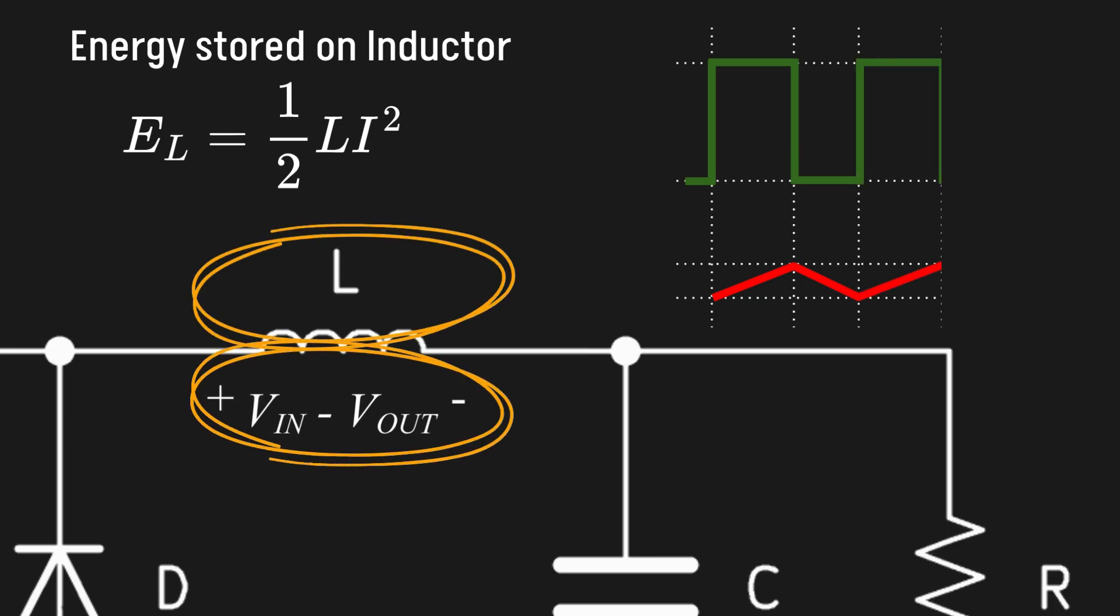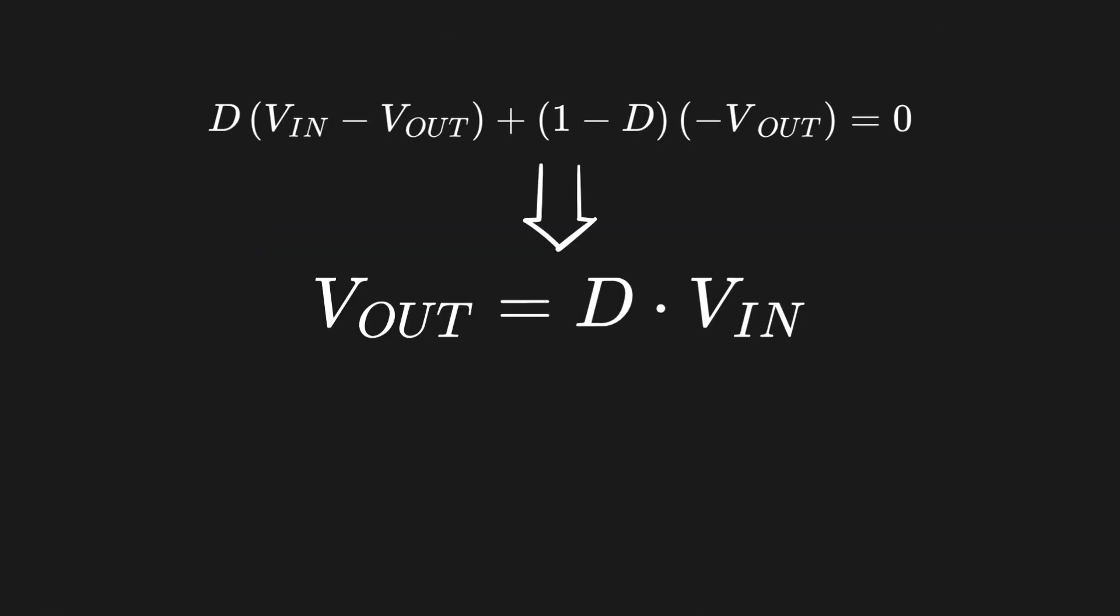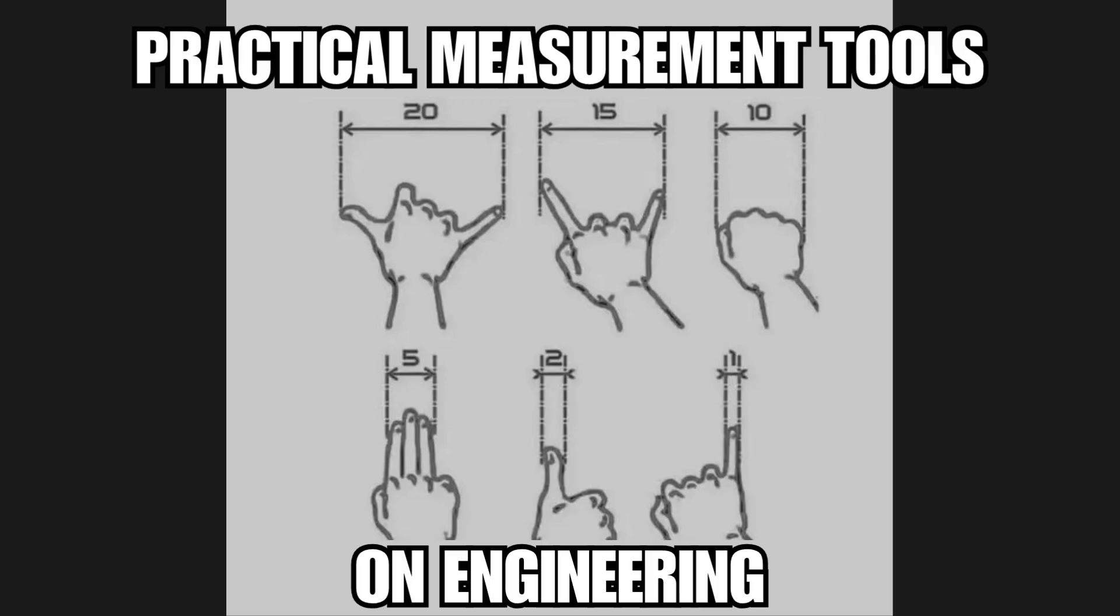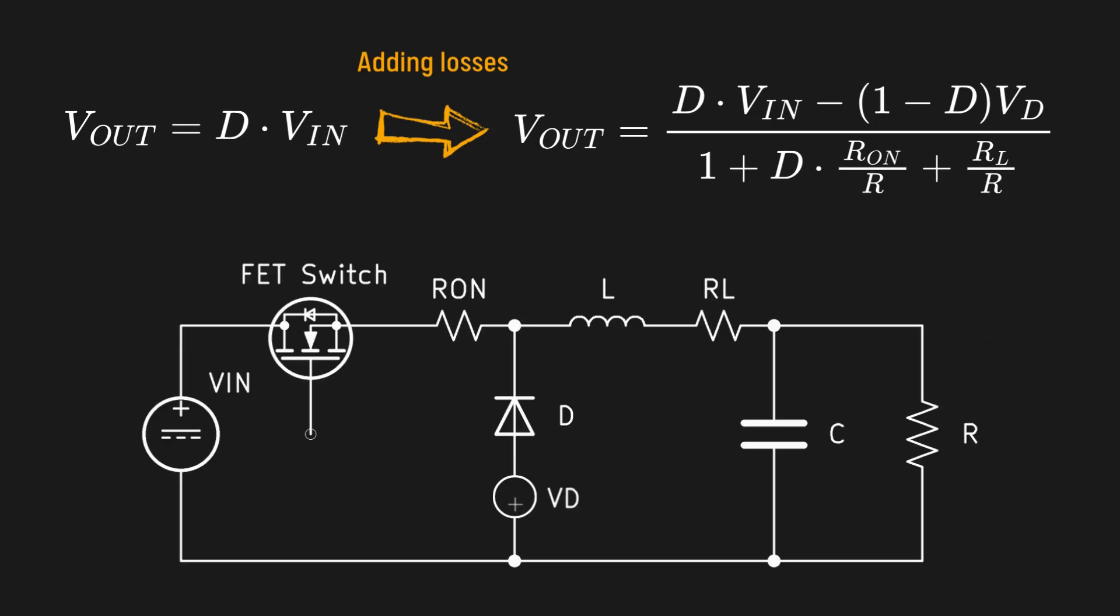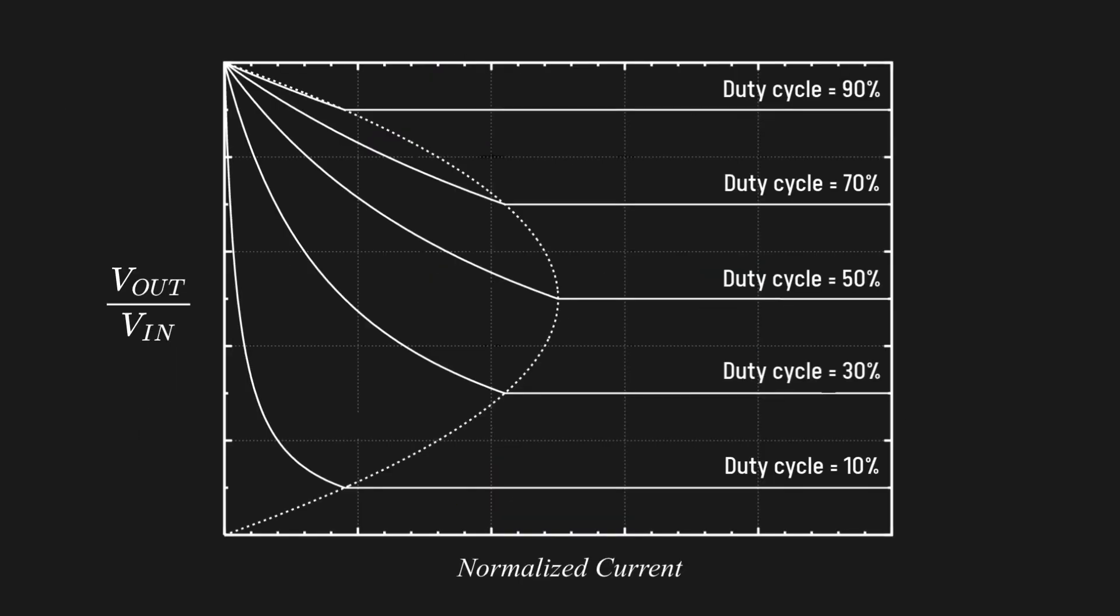This averaging effect can be seen on the ideal equation of buck converters. But as you may know by now, nothing is really ideal. Losses will impact the buck's equation but are limited to the non-idealities of the components and are typically lower than 10%. The biggest change on a buck's equation comes from its different operating modes.